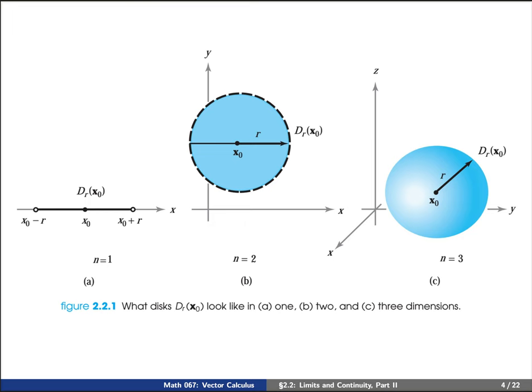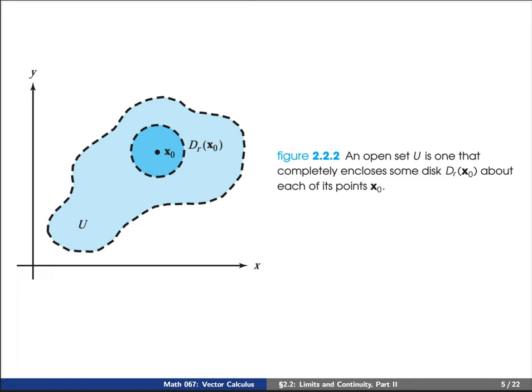Now what about this idea of an open set? Let's consider a collection U as you see here on your screen. If we pick any point x₀ inside of U, notice that we can choose a radius r small enough so that the darker shaded region of blue — that is D_r of x₀ — is completely contained inside of our given set U.